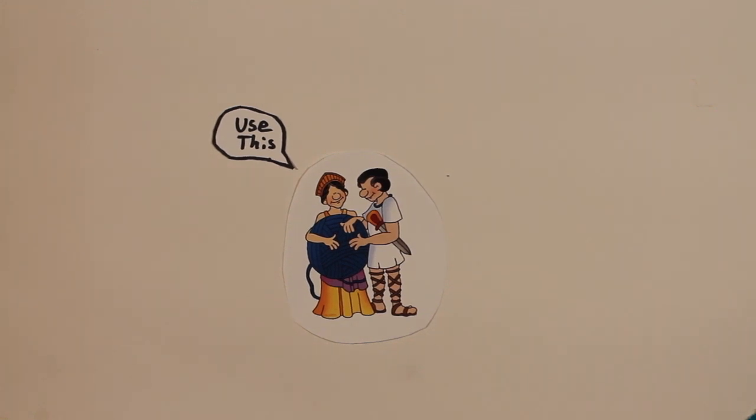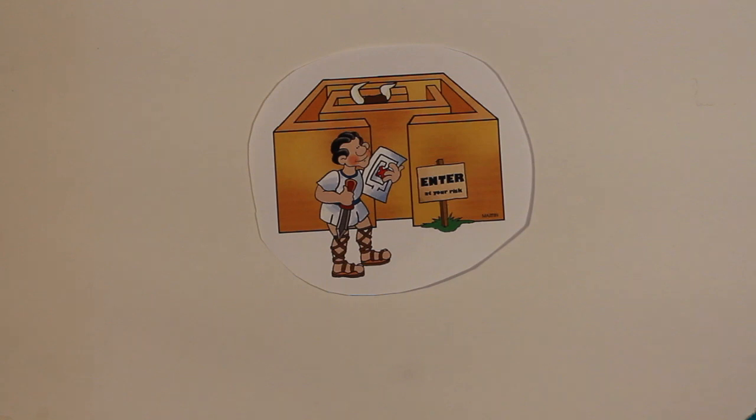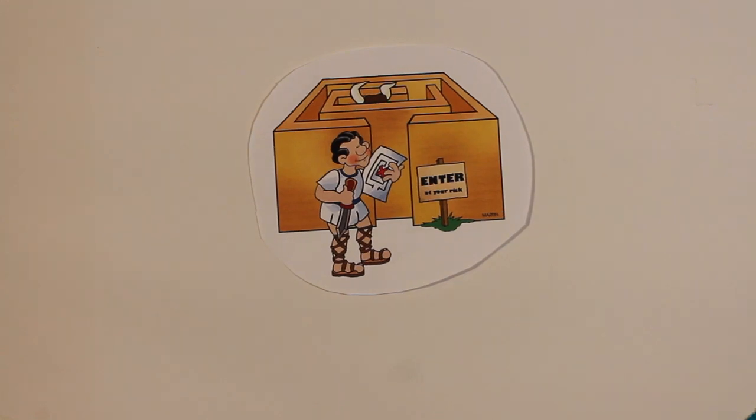Consulted by Daedalus, Ariadne gave Theseus a ball of yarn as a clue and told him how to escape the labyrinth. She told Theseus to take the ball of yarn and tie it to the end of the door, and then always go straight down, never left or right, where he would find the Minotaur.